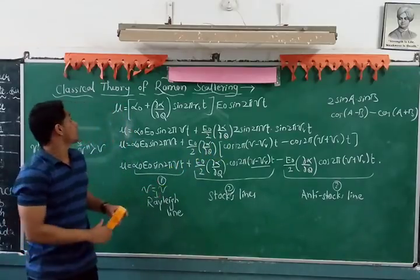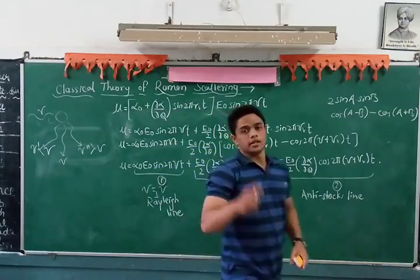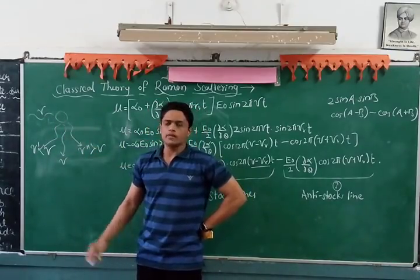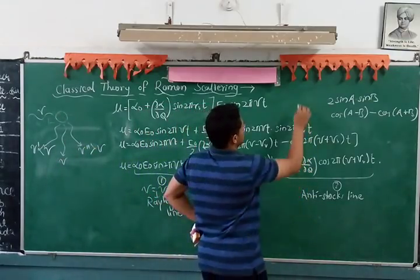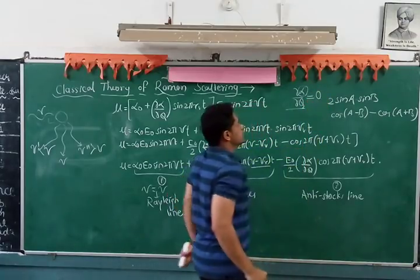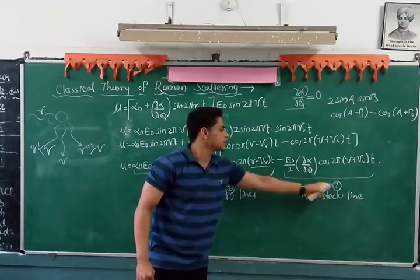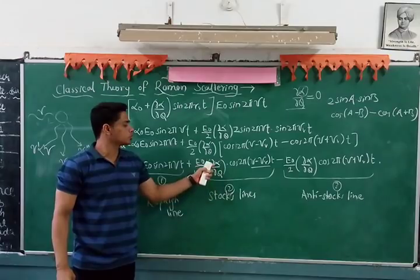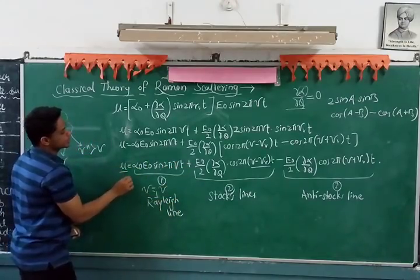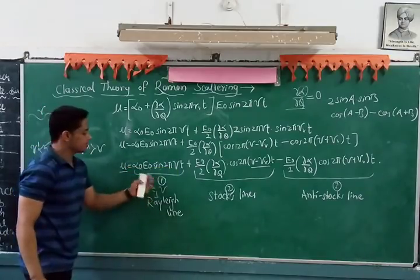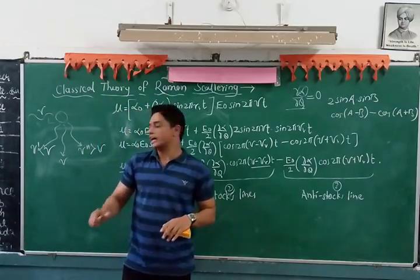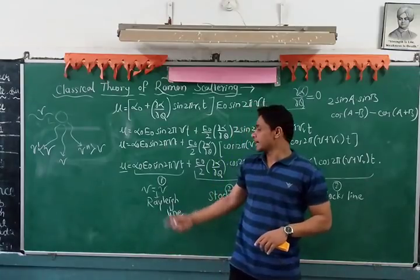Now consider: if we supply radiation but there is no change in the polarizability of the molecule, then ∂α/∂q = 0. In that case, the second and third terms both become zero, and we are left with only the first term: μ = α₀E₀ sin(2πνt). This is just Rayleigh scattering. If you ask how to make the first term zero — only if we don't supply any radiation, then there is no frequency and the term becomes zero.